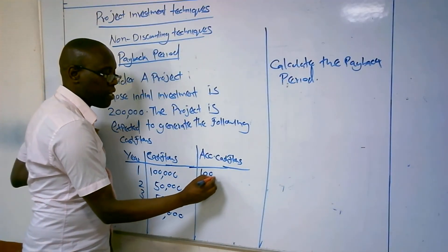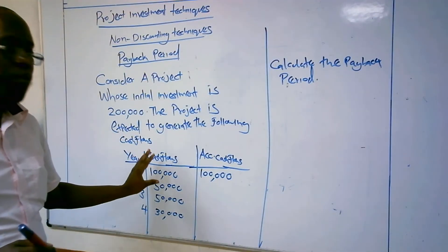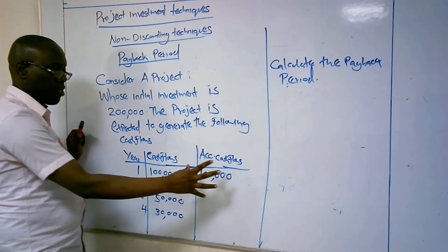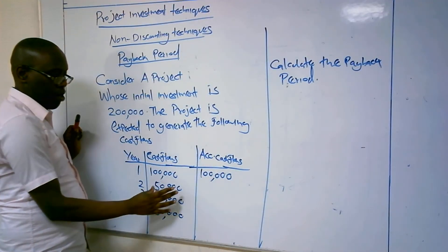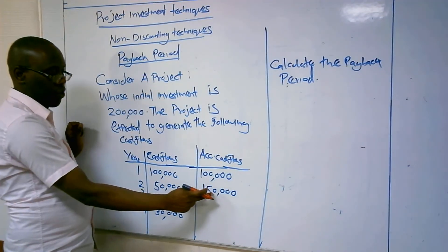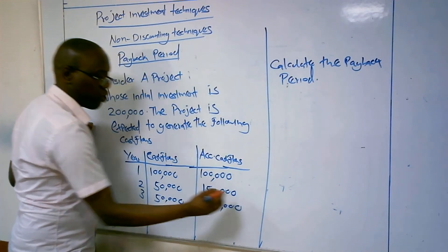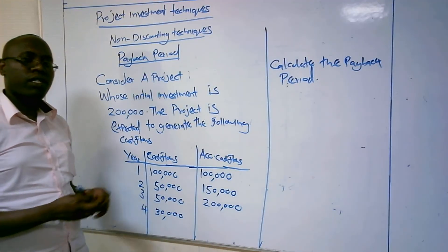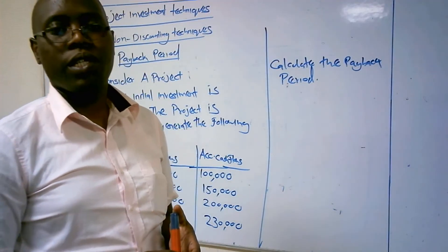When asked about the payback period, you create a column of accumulated cash flows. The first cash flow in Year 1 — which is 100,000 — is transferred into that column. Then you add the next cash flow: 100,000 plus 50,000 gives you 150,000. Then 150,000 plus 50,000 gives you 200,000. Then 200,000 plus 30,000 gives you 230,000. So now you have the accumulated cash flows.